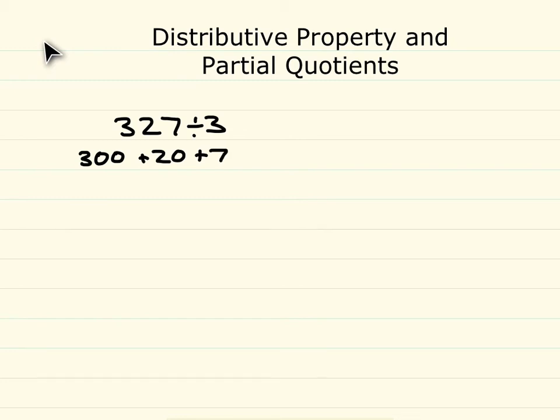But we know we're going to take each of these parts divided by 3. However, if you look at these parts, 20 and 7 are both not divisible by 3 very well. But I do know that 27 together is divisible by 3.